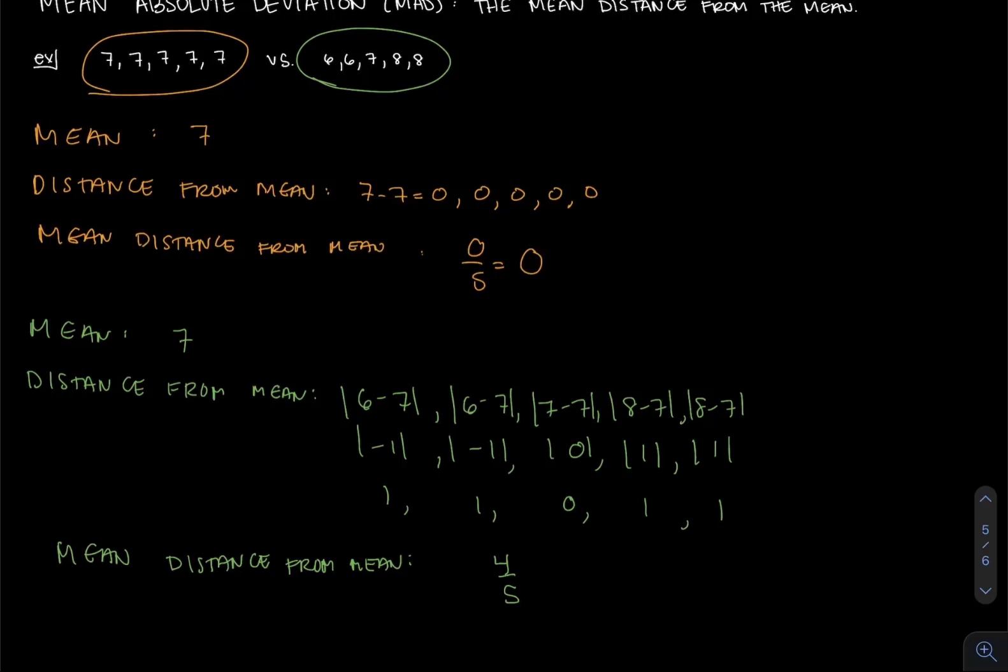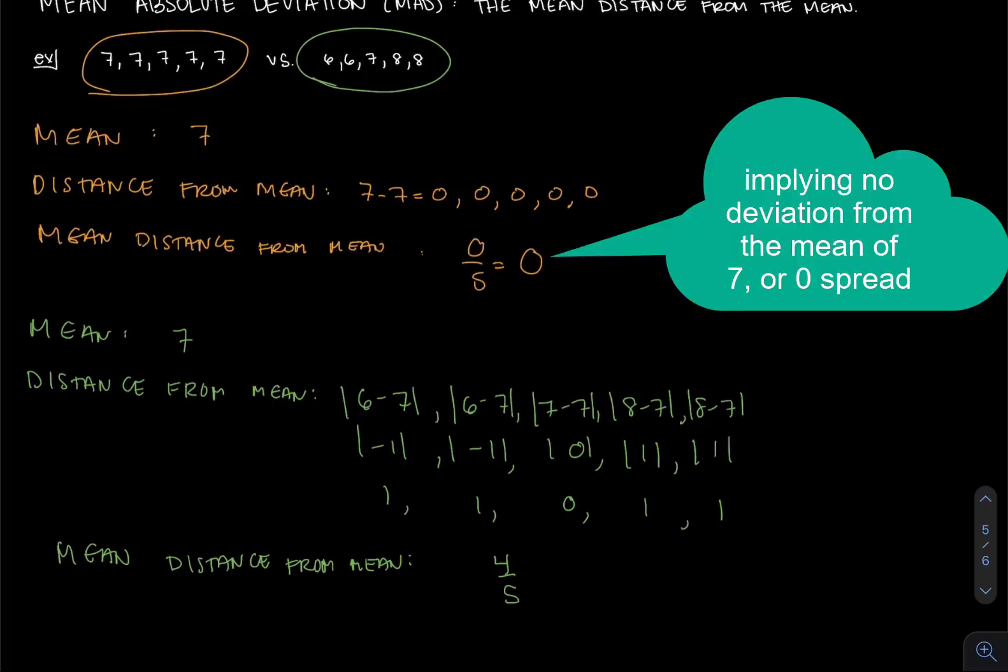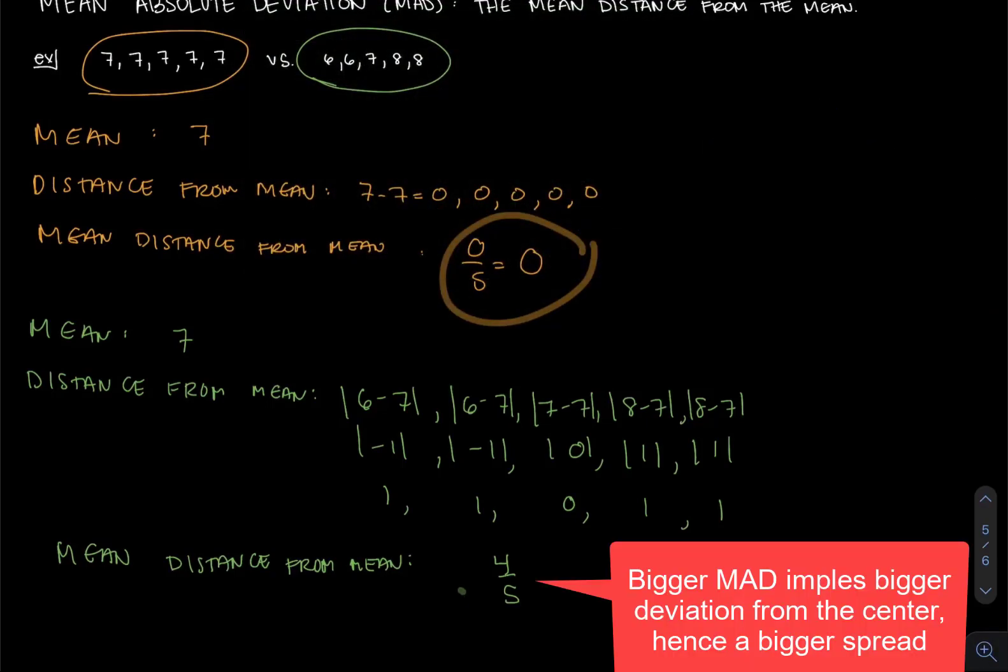So you would say that the data set of all sevens is less spread out than the data set of 6, 6, 7, 8, and 8 because the MAD for all sevens is zero, where the MAD for the two sixes, the seven, and the eight is four fifths. So they're more spread apart.